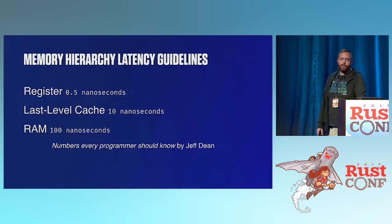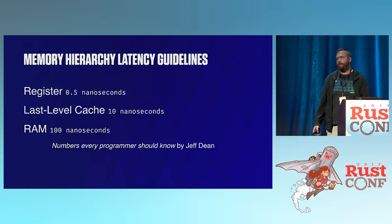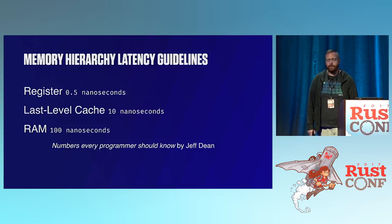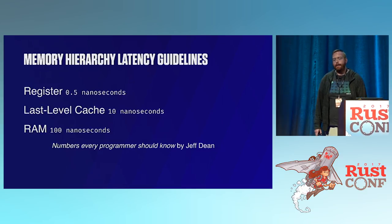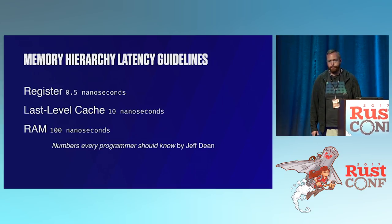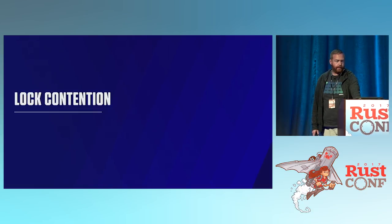When we talk about memory stalls, we're really talking about the memory hierarchy. These numbers are here to give a sense of the order-of-magnitude changes as you move up levels. A register takes about half a nanosecond. Your last-level cache is around 10 nanoseconds — in a CPU you have L1, L2, and sometimes L3 cache, each layer larger, slower, and cheaper. Talking to DRAM is about 100 nanoseconds.